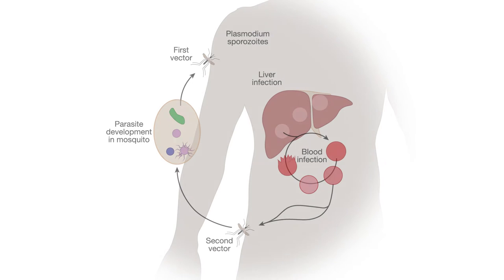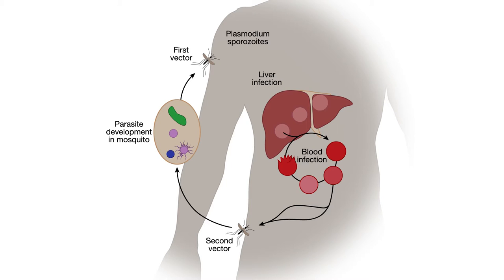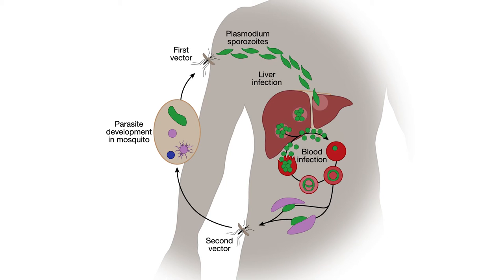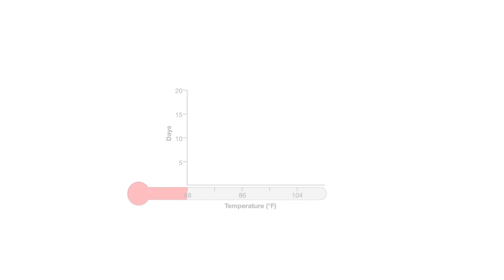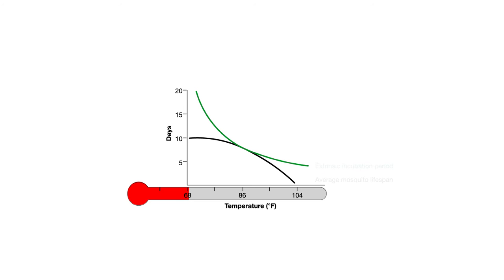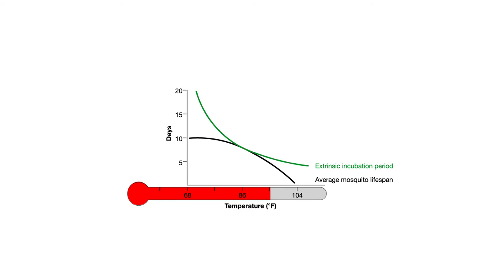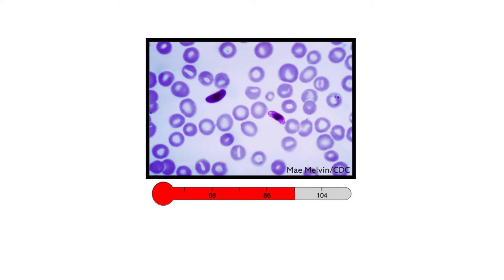Because malaria is a disease of temperature-sensitive parasites spread by climate-sensitive mosquitoes, environmental change can potentially shift the malaria burden up or down. For example, the malaria-transmitting mosquitoes in Africa prefer temperatures in the 60s to mid-80s. They'll die if it drops below 50, or goes above 95. Temperatures also influence the incubation period of the plasmodium parasite.